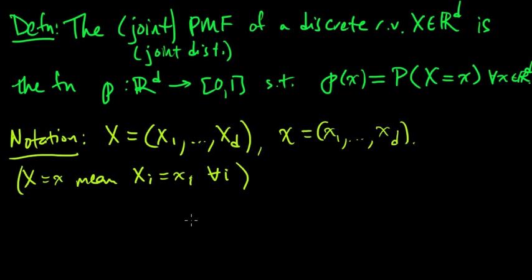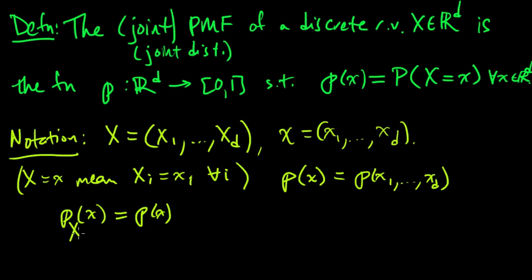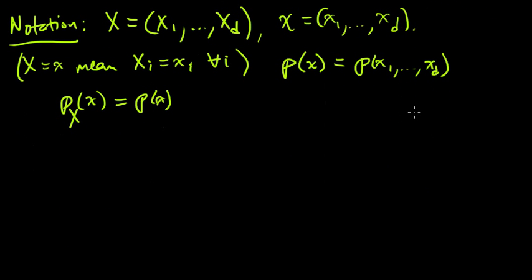And a further notational remark here is that sometimes, even though I use p, this is technically speaking a function on vectors, sometimes we'll write it in terms of the individual components. And one more notational remark is that sometimes we will write p subscript X equal to p of x, to emphasize that this is the PMF for this particular random variable. So that becomes important later on when you've got lots of different random variables flying around and you need to keep track of whose PMF is who.